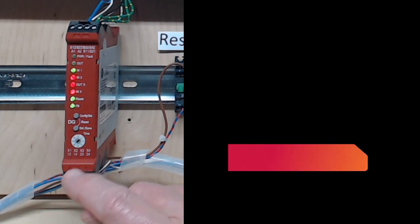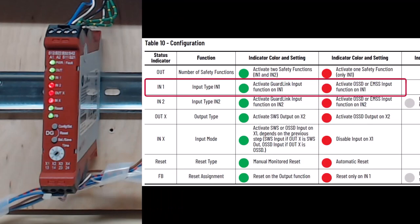Now, short press the select save button to move on to the next feature. The in one LED is flashing green now. From the configuration table, you see the guard link function is selected. This is what you want, so short press the select button to move on to the next feature.